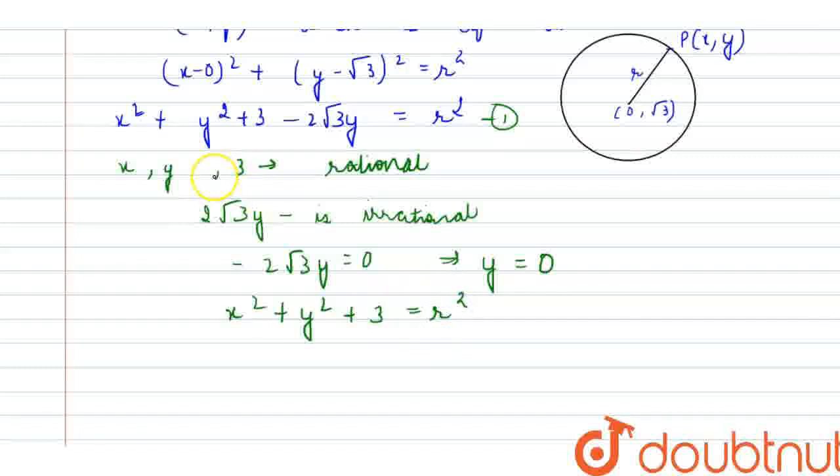Here in the question, I forgot to mention, r² is also rational. So proceeding forward, what I get? I get x² equal to r² minus 3. From here, I get x is equal to plus minus √(r² - 3).